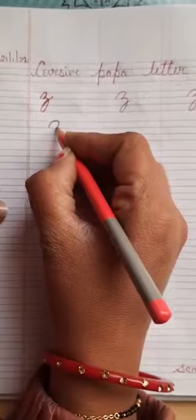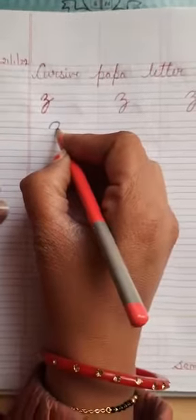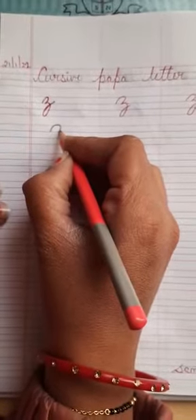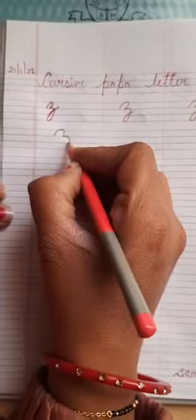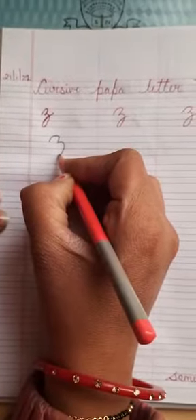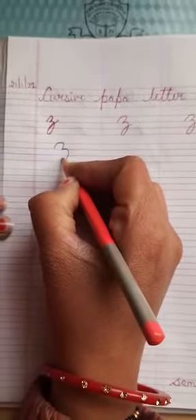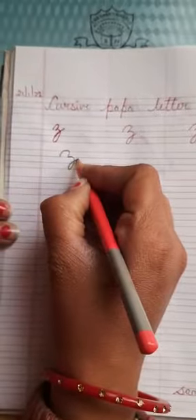After this, from this corner, or from this point, you will bring your pencil down to the red line. And then again, you will take it to the blue line. So this is the way how you will make Z.